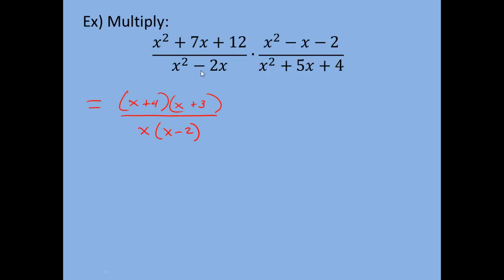Next, for x squared minus x minus 2: there is no GCF, I have three terms and no number in front of my x squared, so I can make two sets of parentheses with x times x. Numbers that multiply to negative 2 and add to negative 1 are negative 2 and positive 1, because negative 2 times 1 is negative 2, and negative 2 plus 1 gives negative 1. So this factors as (x minus 2)(x plus 1).